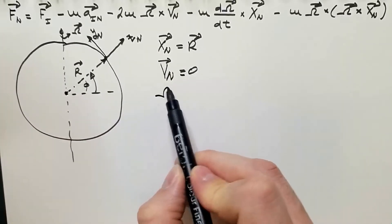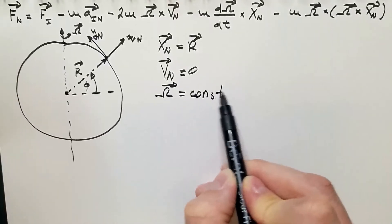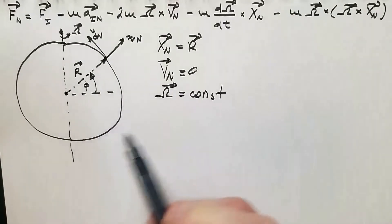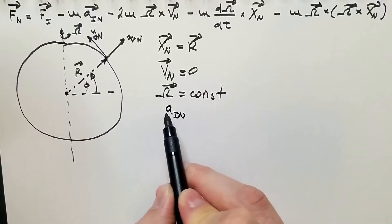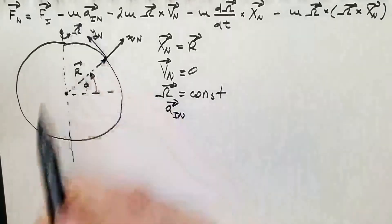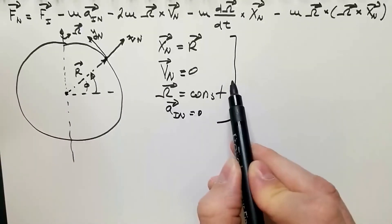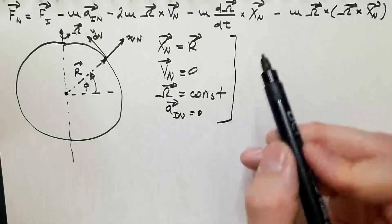Similarly, we know that omega is constant in time. It doesn't change over time. And this point is not moving towards or away from the Earth's center, which means that this acceleration a_n is also zero.